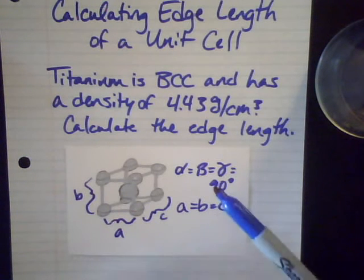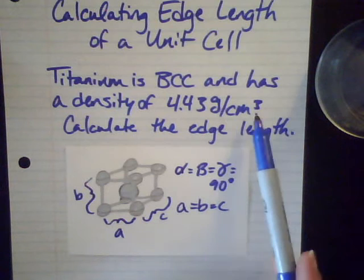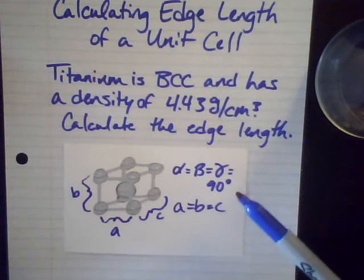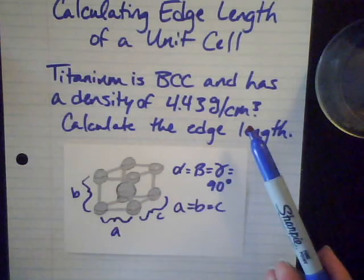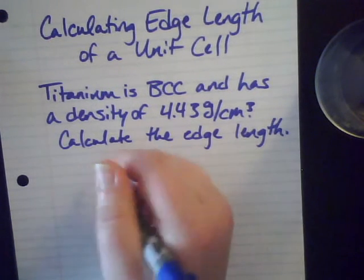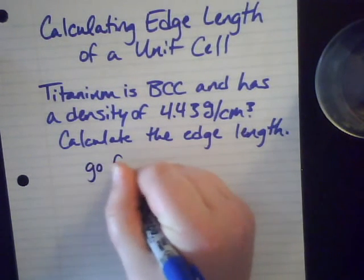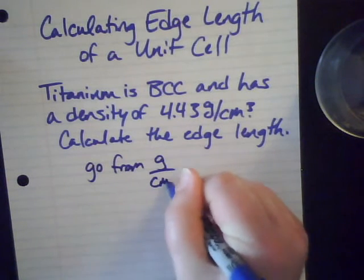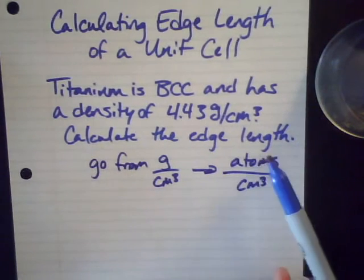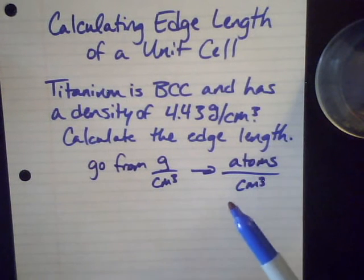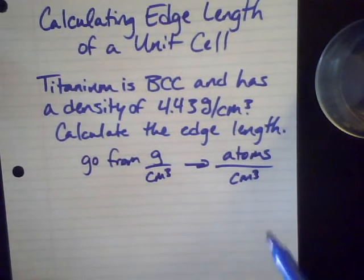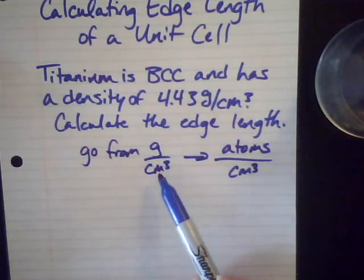Now the key to this is to go from density, so you're given this density in grams per centimeters cubed. We'll have more information about the edge of these things if we know how many atoms there are per centimeter cubed. So our first step here is to go from density to number of atoms per cubic centimeter. And anytime we're going to figure out the number of atoms of something, then you know we're going to use Avogadro's number 6.02 times 10 to the 23rd.